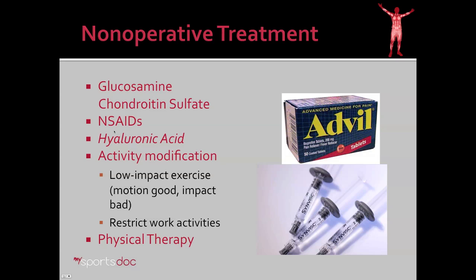NSAIDs — non-steroidal anti-inflammatories, such as Advil or Aleve — help reduce the inflammation associated with cartilage injuries and can be helpful. Hyaluronic acid, sometimes termed rooster comb injections, works as a lubrication for the joint. Since cartilage needs to be a frictionless surface, hyaluronic acid reduces friction and helps smooth rough areas of cartilage, limiting further damage. Activity modification is always an option — low impact exercise is better for the joints. Motion is good and impact is bad: a stationary bike is going to be a whole lot easier on the knees than running miles on the road. Restricting work activities for a limited time may also be helpful, and there's always physical therapy.